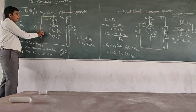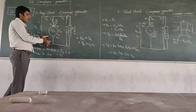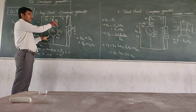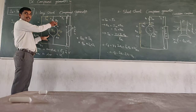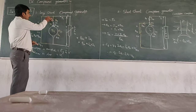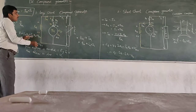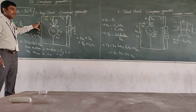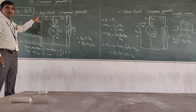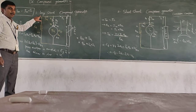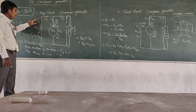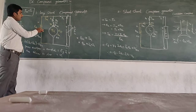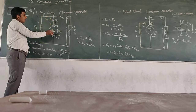If the shunt field winding is connected across both the armature and series field winding, then it is a long shunt generator. The shunt field winding may be represented as Rsh, and it is connected across both.